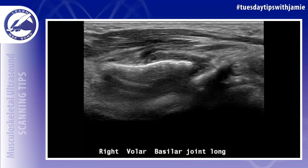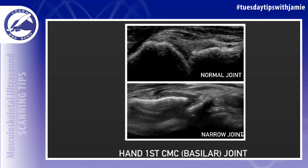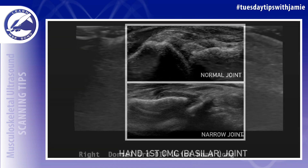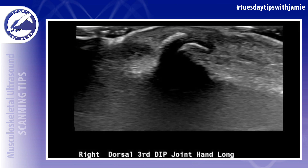In the next example, we're going to move to the hand. This is the first carpometacarpal joint, also known as the basilar joint. The top example is one of a normal joint space and on the bottom is one with joint space narrowing.